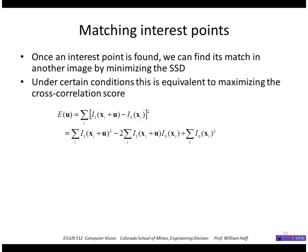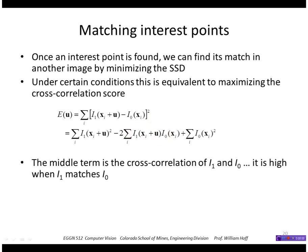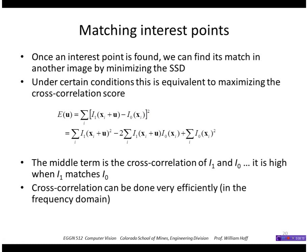And this quantity is just the cross-correlation score. This quantity is high where the image one patch matches the image zero patch. And the reason we'd like to do it this way is cross-correlation can be done very efficiently in the frequency domain.